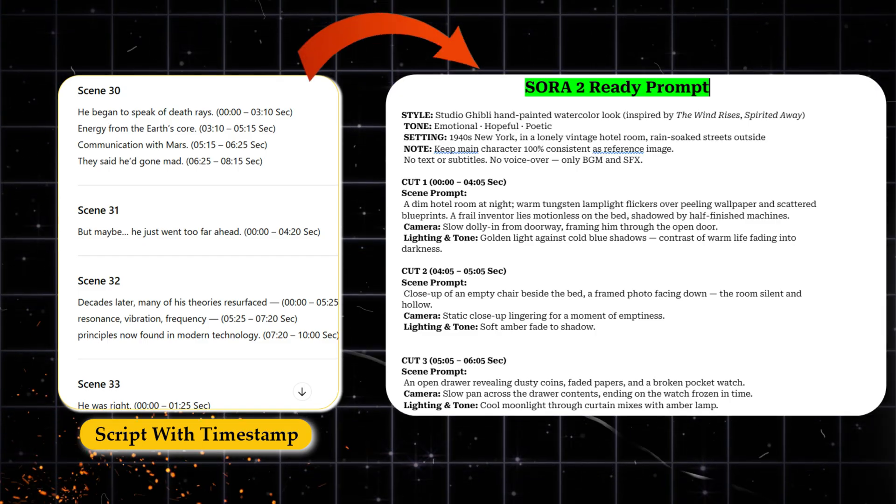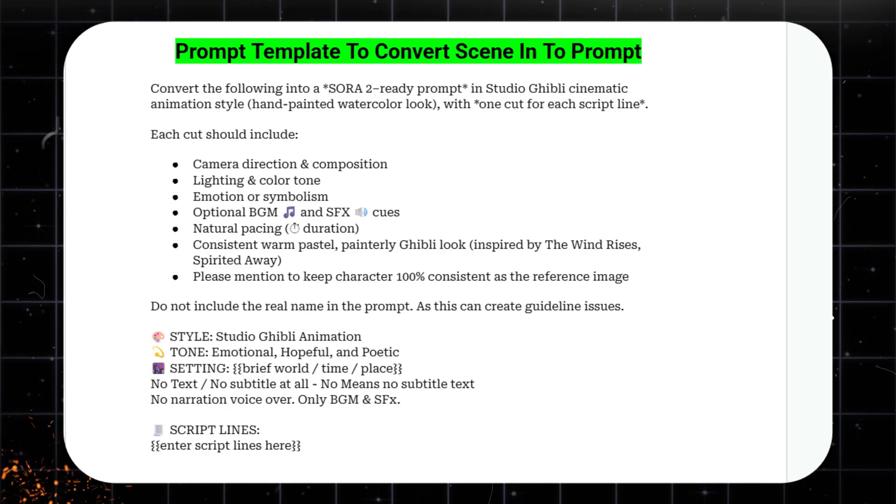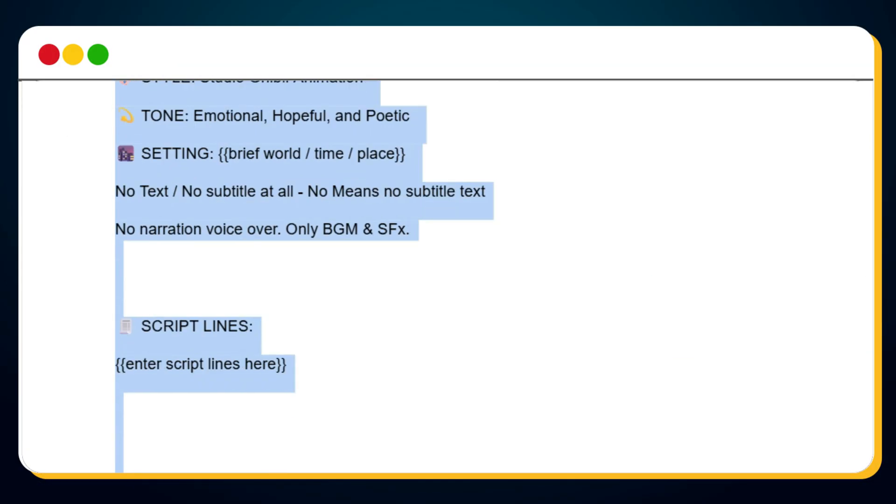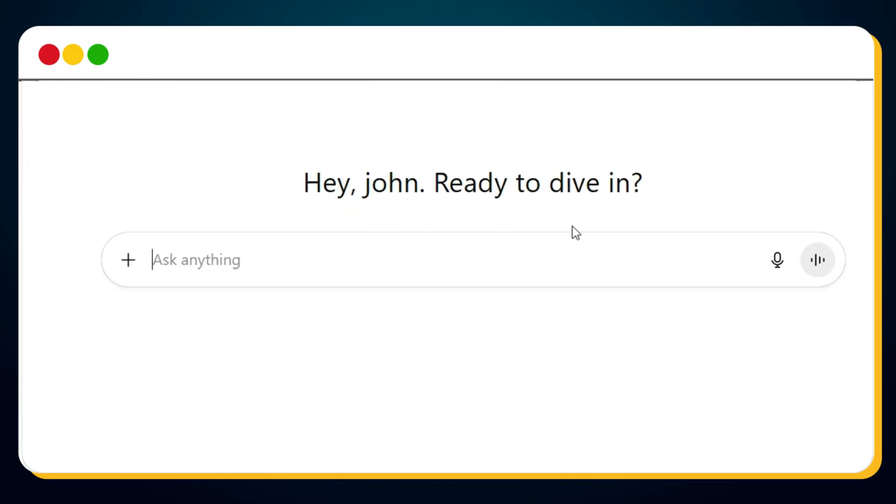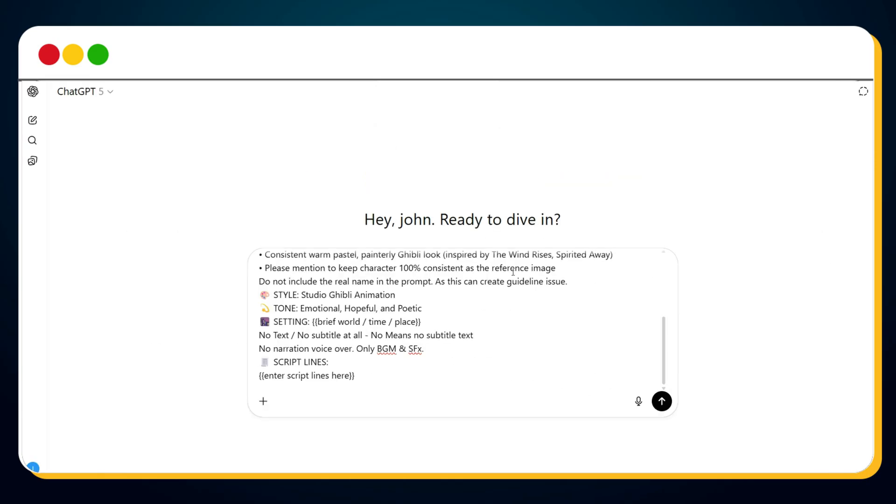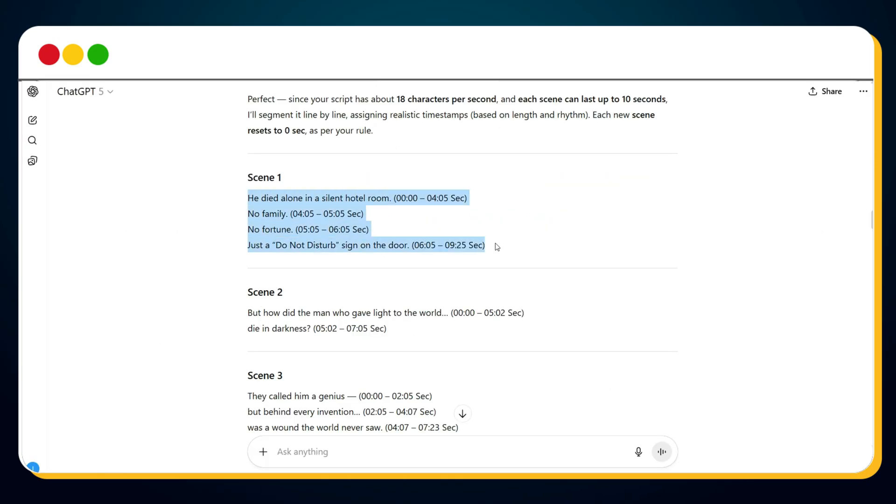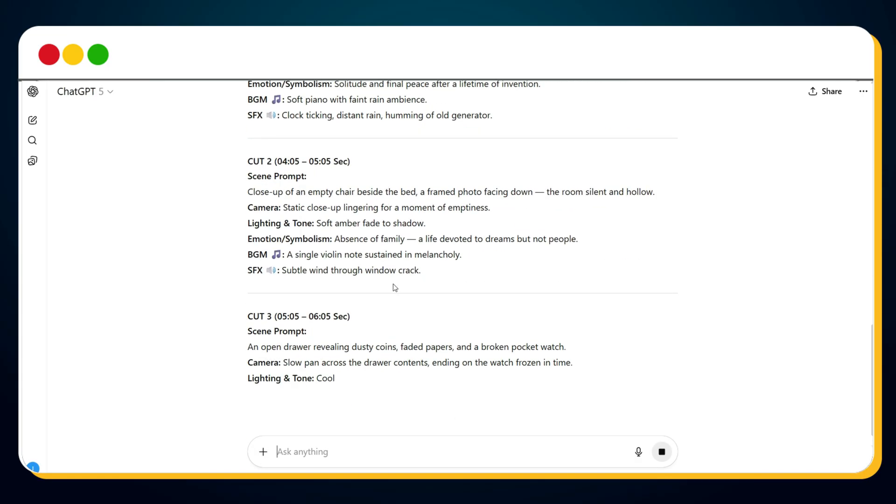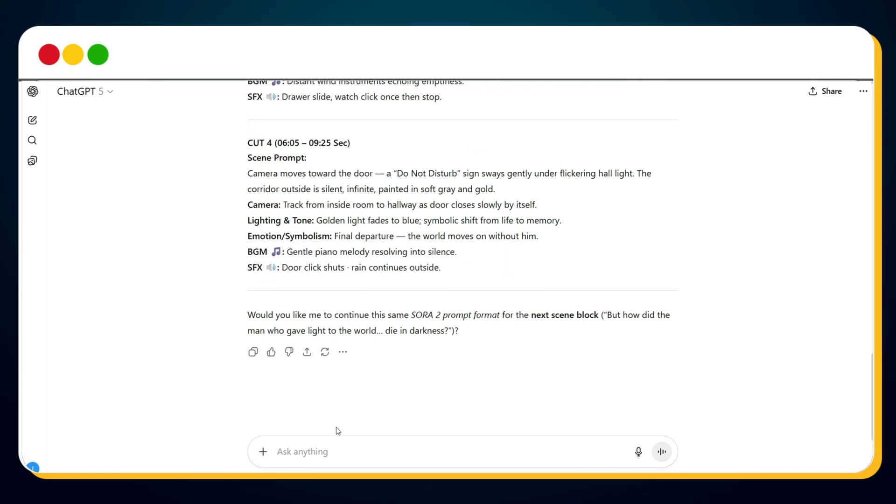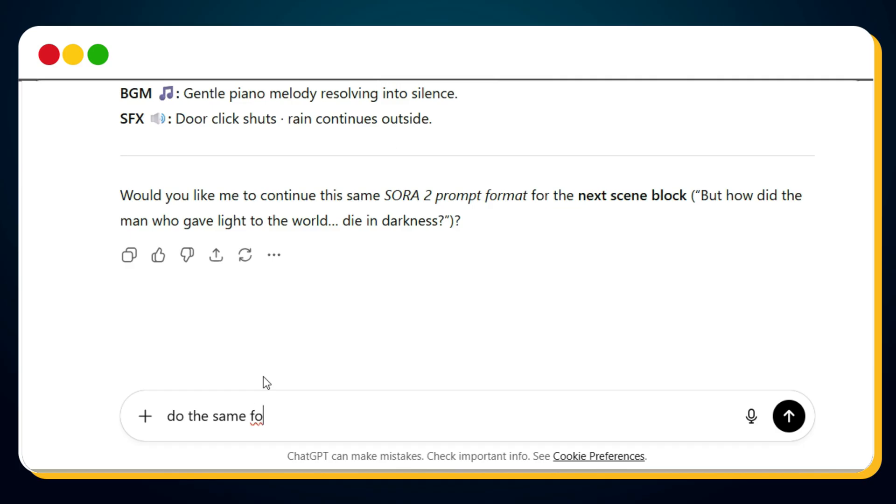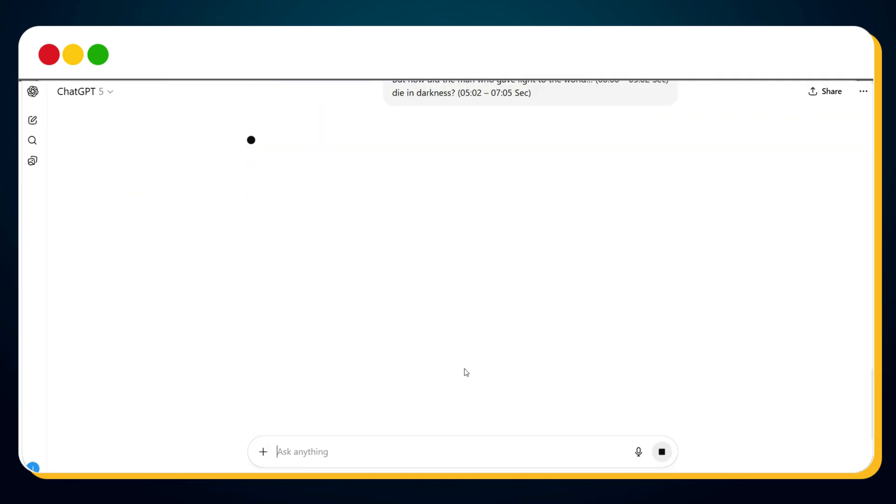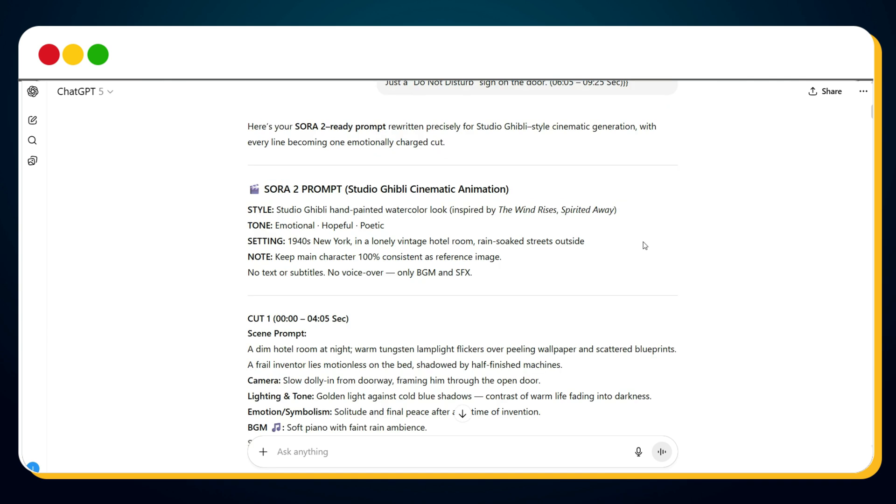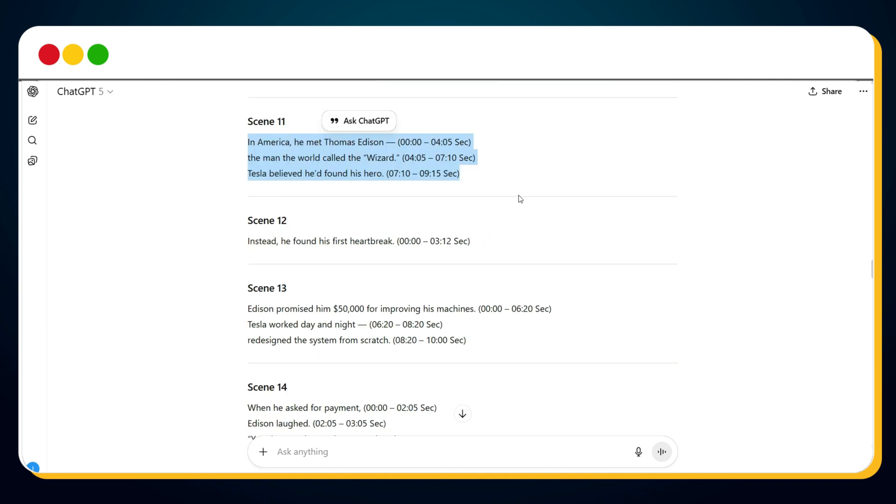Now, to convert your own scenes into prompts like this, use my prompt template. Copy the entire prompt template. Open a new ChatGPT chat. Paste the template. Then copy scene 1 from your timestamp script and replace the placeholder text with it. ChatGPT will instantly generate a detailed Sora 2 prompt for that scene. To generate prompts for the next ones, simply type, do the same for scene 2, then paste scene 2. Repeat this for all your scenes, and you'll have a complete set of Sora 2-ready prompts for your full story.